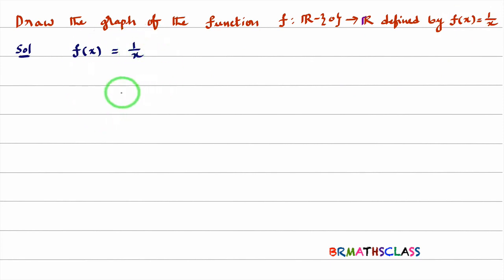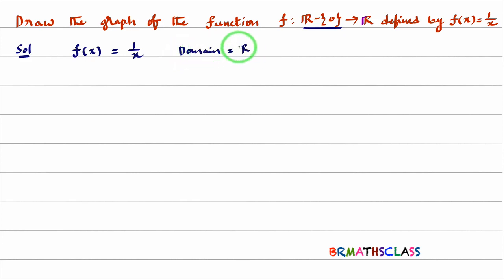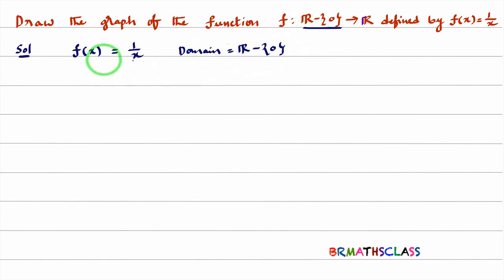Here you need to observe a few things. What is the value of f(0)? f(0) = 1/0. What is 1/0? If there is 0 in the denominator, this is not defined. So the domain of this function is all real numbers except 0. You need to keep this point in mind — in the domain, 0 is not included.